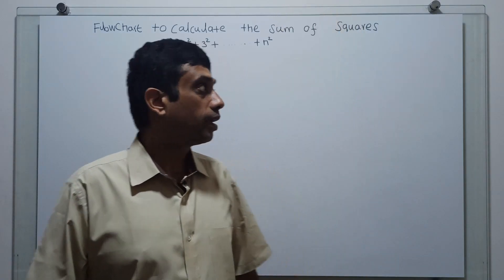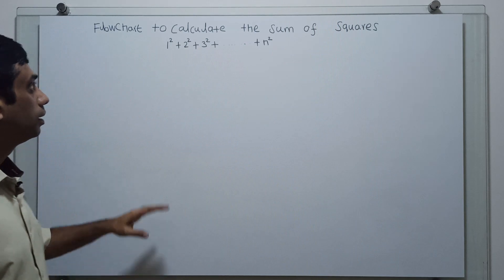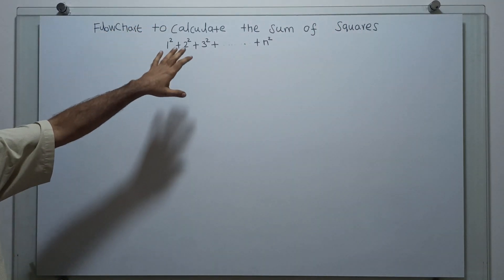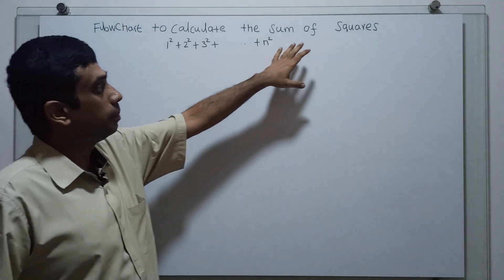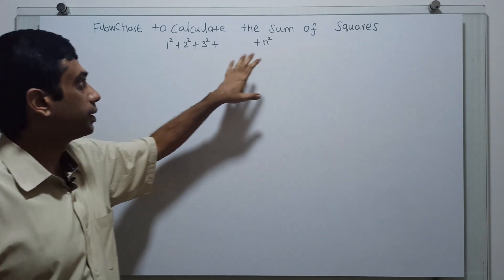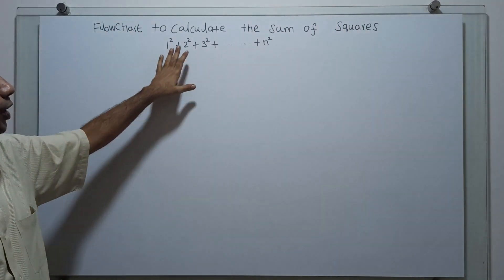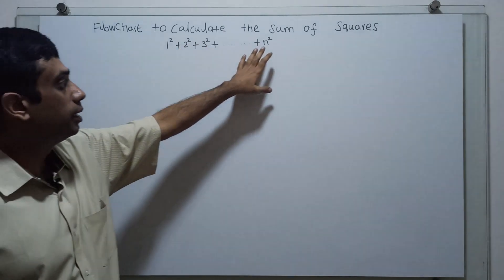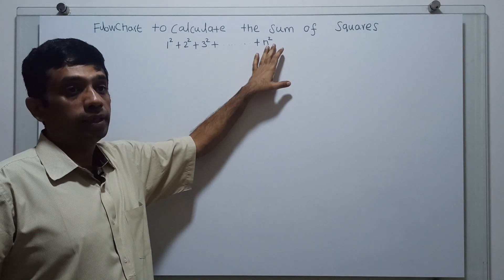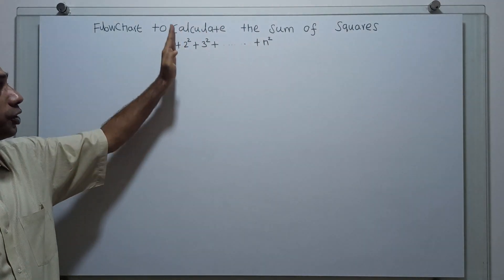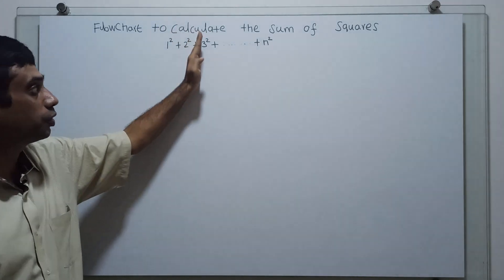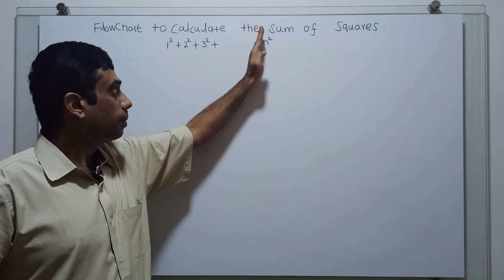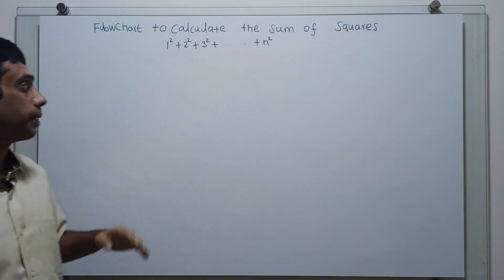Hello friends, we are going to draw a flowchart to calculate the sum of squares — that is 1 square, 2 square, 3 square, up to n square. The sum of 1 square plus 2 square plus 3 square, up to n square.